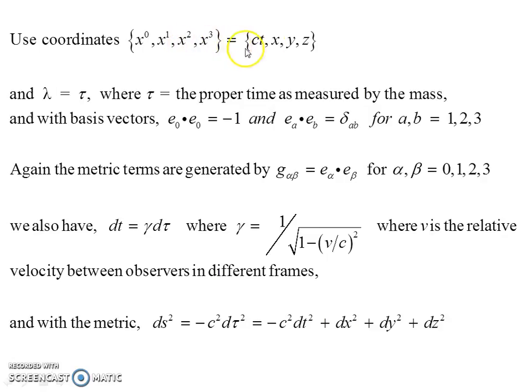So let's use the coordinates {x^0, x^1, x^2, x^3} = {ct, x, y, z}, same as before. Lambda now, we're going to use this τ, the proper time as measured by the crew on the spaceship or the particle holding onto its own clock as it travels through spacetime. So τ is the proper time as measured by the mass. The basis vectors again have the property that the scalar product is -1 for the time-like basis vectors, and for the spatial ones, it's just +1. Metric terms are generated by g_αβ = e_α·e_β. So we also have the Lorentz Gamma Factor here, Lorentz Boost,